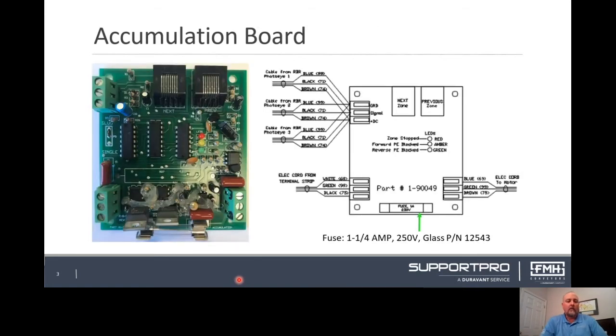There are three lights on this board that will allow you to visibly see the state of the board. The red light shows that the zone is stopped by the board. This zone has accumulated full. The amber light is the forward photo eye is blocked, the photo eye that is further away from the power supply board. The green light shows the reverse photo eye is blocked. That's the photo eye that is closer to the power supply board.